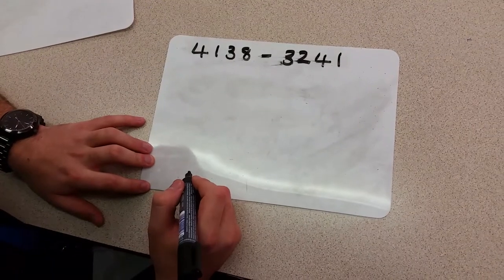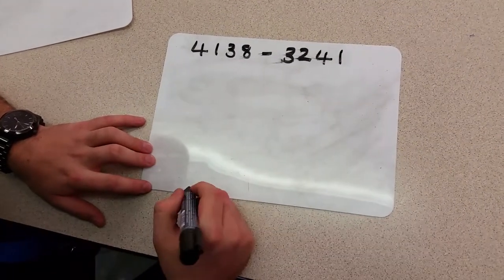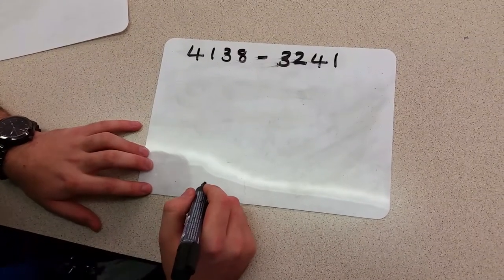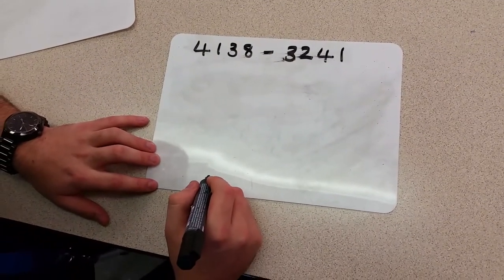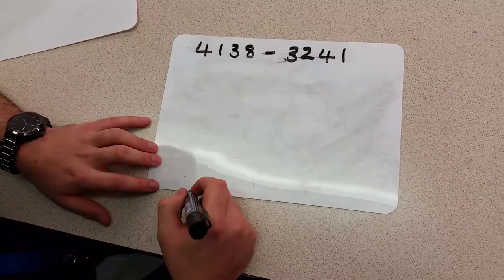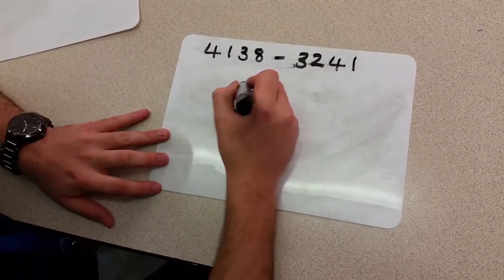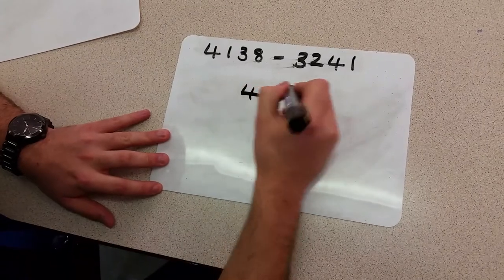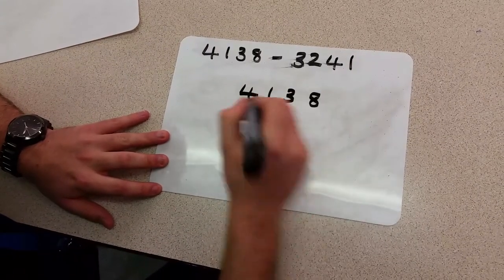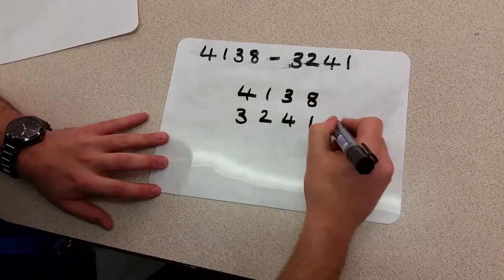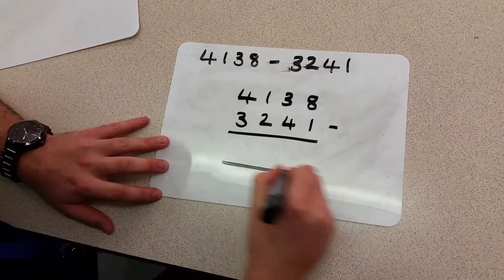The next question featured in our booklet is this subtraction here, 4,138 minus 3,241. We're going to use the column method again, which relies on us placing these numbers with matching place values. We must make sure to put this number first, however. That will be the number on the top of our question. Order is very important this time, unlike the addition question.